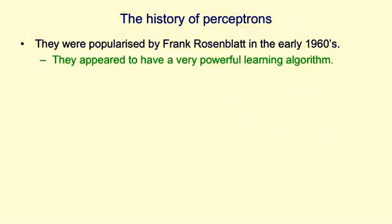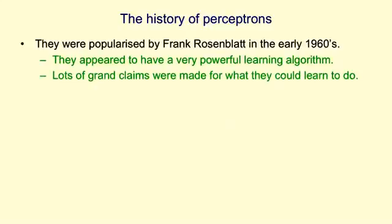Perceptrons have an interesting history. They were popularised in the early 1960s by Frank Rosenblatt, who wrote a great big book called Principles of Neurodynamics, in which he described many different kinds of perceptrons. That book was full of ideas. The most important thing in the book was a very powerful learning algorithm, or something that appeared to be a very powerful learning algorithm. A lot of grand claims were made for what perceptrons could do — for example, people claimed they could tell the difference between pictures of tanks and pictures of trucks, even if the tanks and trucks were partially obscured in a forest.